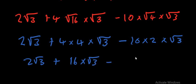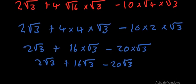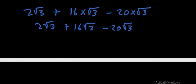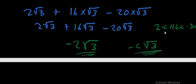We now have 2√3 + 16√3 − 20√3. All these are like terms, just like 2x + 16x − 20x. So we compute 2 + 16 = 18, then 18 − 20 = −2. The answer is −2√3, which is the simplified version of that expression.